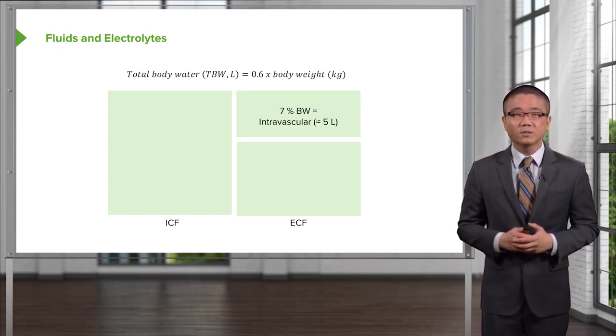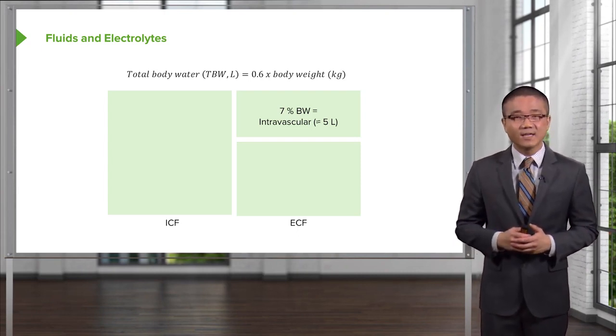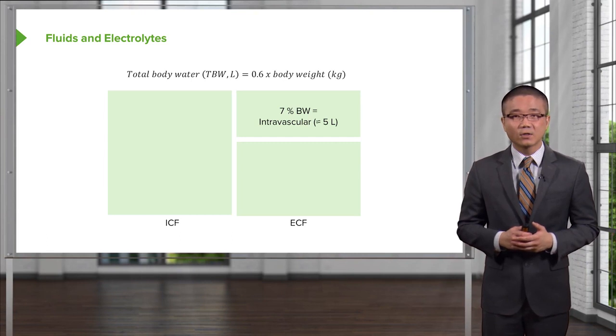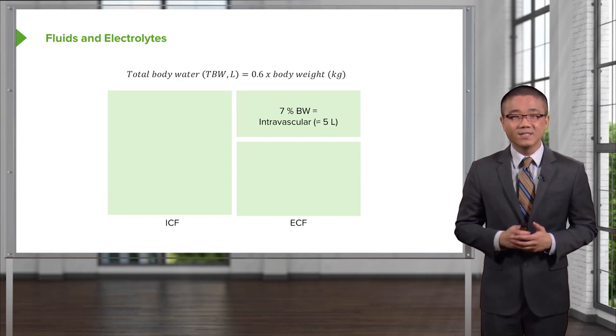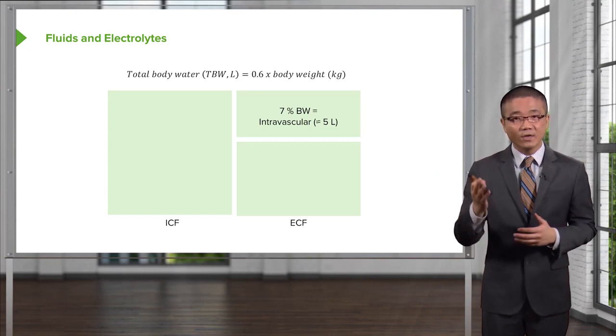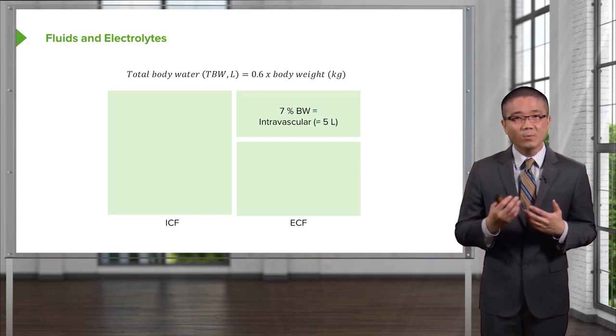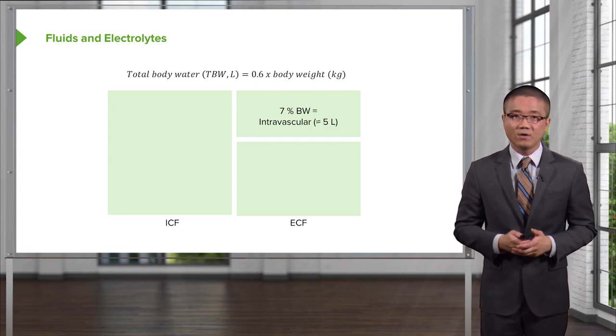Now, the distribution of the fluid is equally important. The vast majority of that 42 liters of fluid is actually intracellular to the tune of two-thirds. One-third of your total body water is actually extracellular and only a very small percentage, one-third of one-third, is contained in your intravascular or circulating volume. When you do all the math, you figure that 7% of your total body weight is actually intravascular. That's how we get the value of approximately five liters of fluid in your total circulating volume.